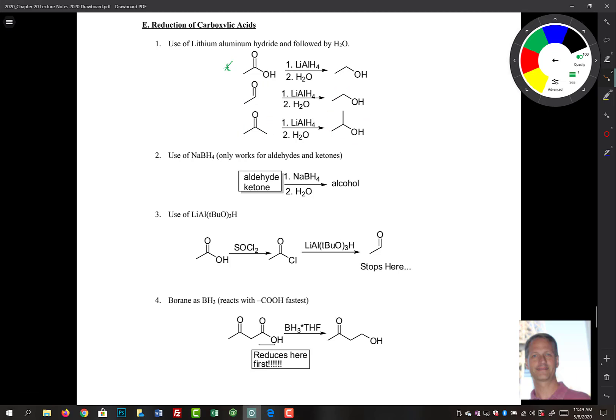NaBH4 works also. Remember that works for aldehydes and ketones. So only under these circumstances can we see a reduction. LAH, if you recall, is more reactive. We can also replace this with a chloro group to make an acid chloride, and then we can use this weaker form of LAH—lithium aluminum tri-t-butoxy hydride—and that makes this reaction stop at the aldehyde.